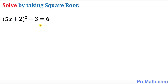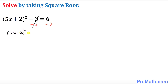The very first thing we're going to do is get rid of this negative 3 by adding 3 on both sides. So this negative 3 and positive 3 they cancel, and we have 5x plus 2 squared on the left hand side equals 9.